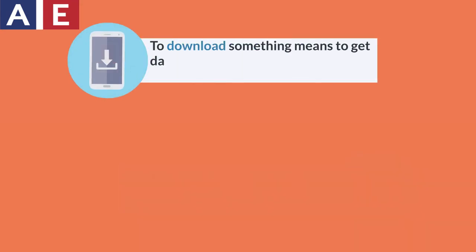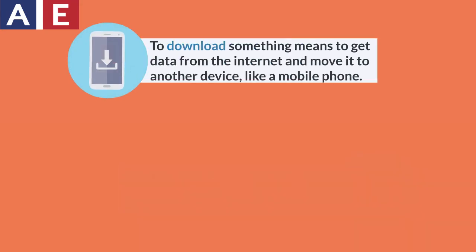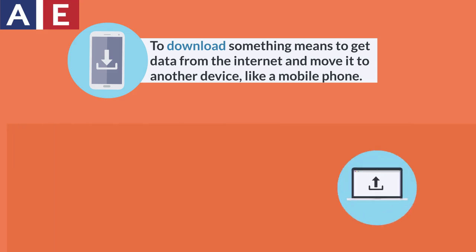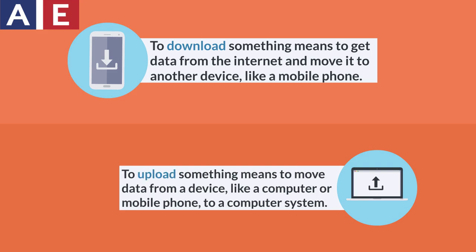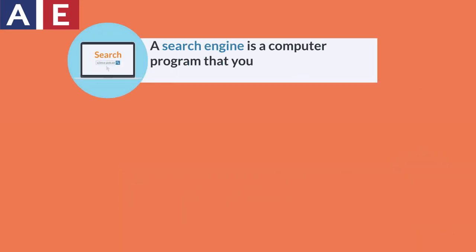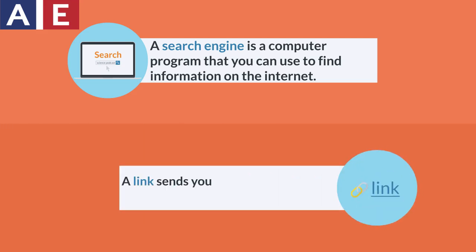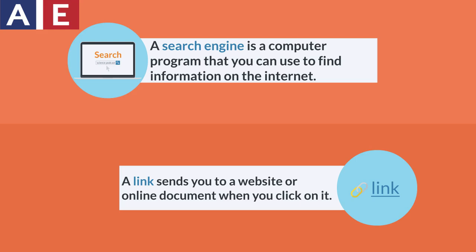To download something means to get data from the internet and move it to another device, like a mobile phone. To upload something means to move data from a device, like a computer or mobile phone, to a computer system. A search engine is a computer program that you can use to find information on the internet. And a link sends you to a website or online document when you click on it.